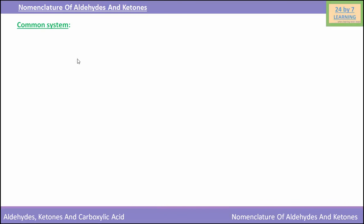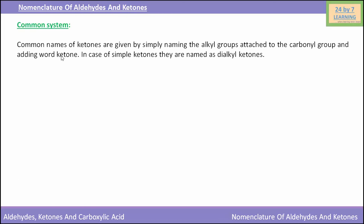Now we will see the nomenclature of ketones in the common system. Common names of ketones are given by simply naming the alkyl groups attached to the carbonyl group and adding the word 'ketone'. In the case of simple ketones, they are named as dialkyl ketones. For example, CH3COCH3 is named in the common system as dimethyl ketone, because two methyl groups and one keto group are present.